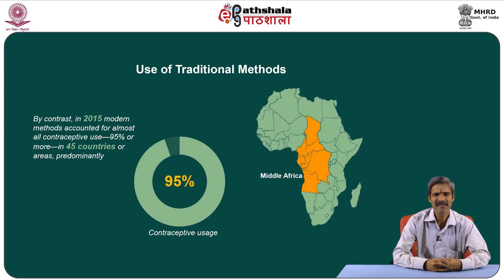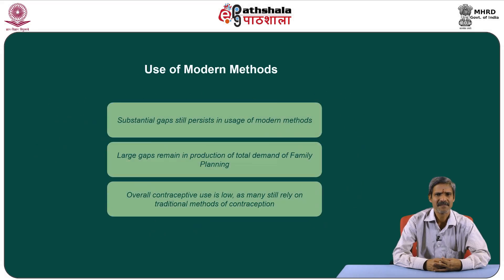Of all traditional methods, withdrawal is the widely practiced method in Southern Europe and a few selected countries from Western Asia. In Middle Africa, the rhythm method is found to be more common. By contrast, in 2015, modern methods accounted for almost all contraceptive use — 95 percent or more — in 45 countries. Substantial gaps still exist in use of modern methods among couples who want to prevent pregnancy, particularly where overall contraceptive use is low or where many couples rely on traditional methods.